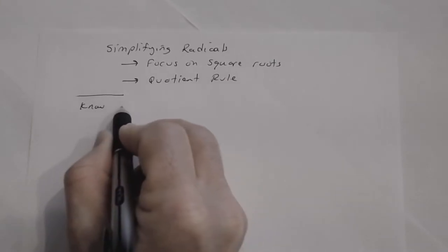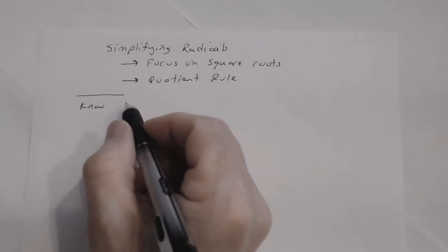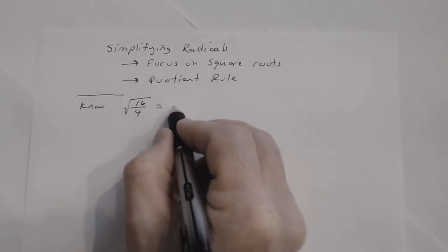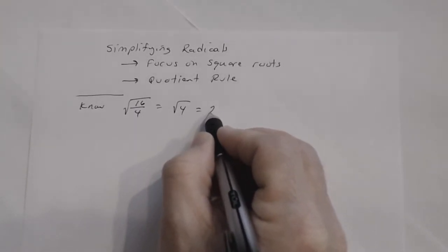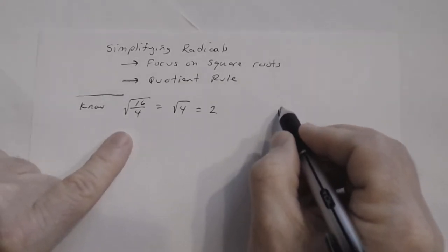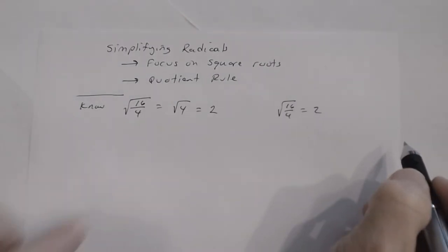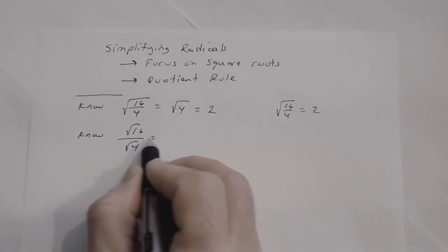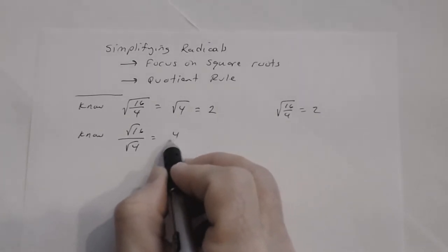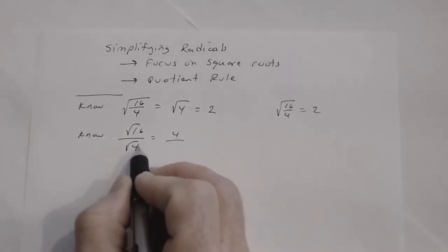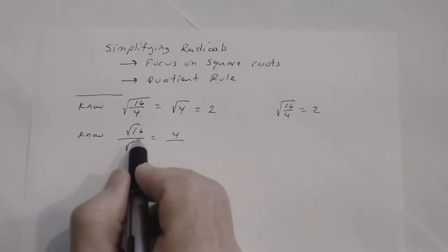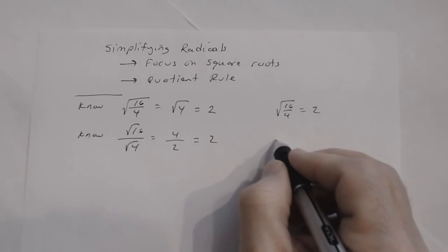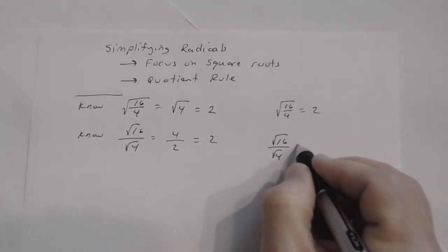We know that the square root of 16 divided by 4 — now 16 divided by 4 is 4, so that's the square root of 4, and the square root of 4 is 2. We also know that the square root of 16 divided by the square root of 4 — the square root of 16 is 4, the square root of 4 is 2, so 4 divided by 2 is also 2.